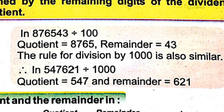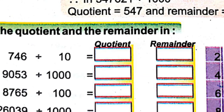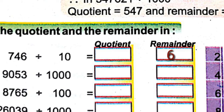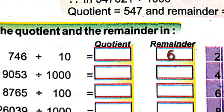Now we will do some problems: find the quotient and the remainder. Question 1: 746 divided by 10. We know the rule — if we divide by 10, the ones place digit is the remainder. Here the remainder is 6, and the quotient is formed by the rest of the digits: 74. So quotient is 74 and remainder is 6.